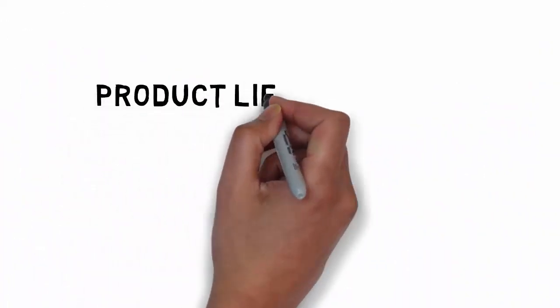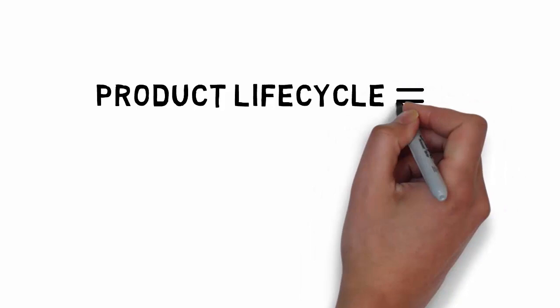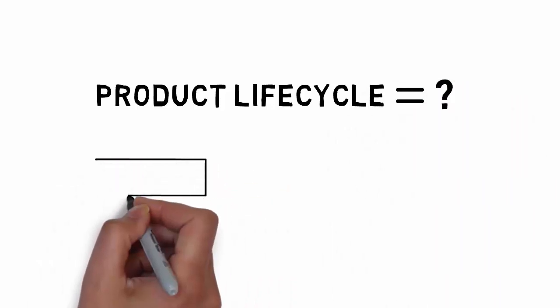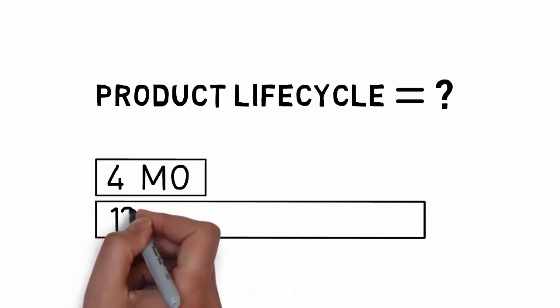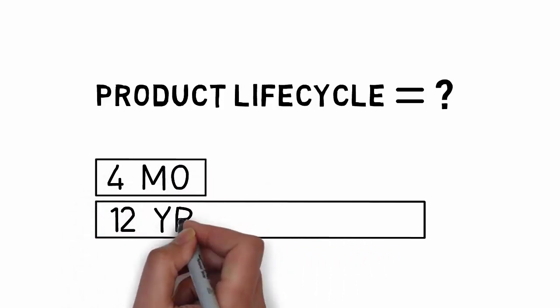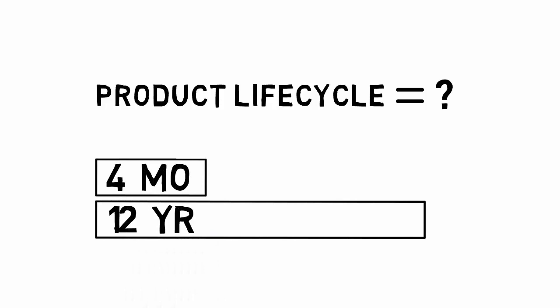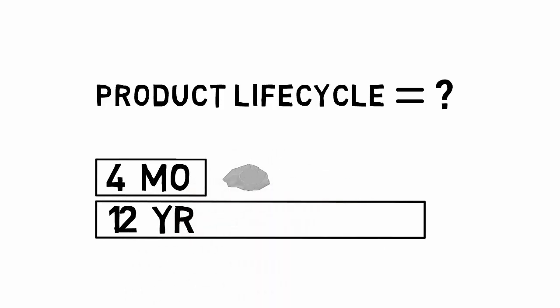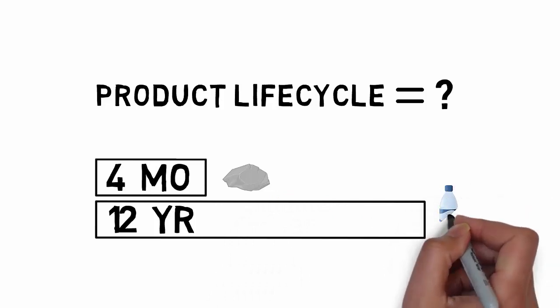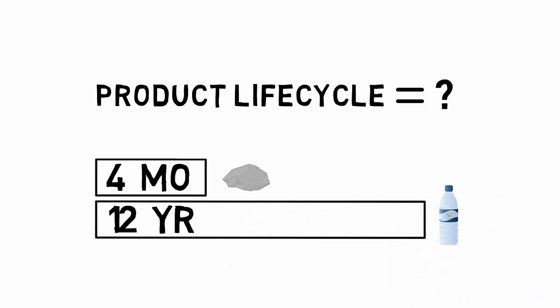Keep in mind, there is no set time period for each stage. For example, certain life cycles can be extremely short for products considered fads, such as pet rocks, whereas a product life cycle for basic consumer goods, such as water, can last for many years.